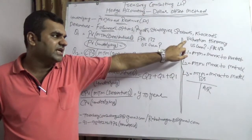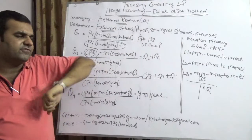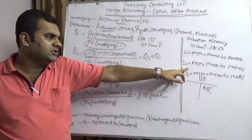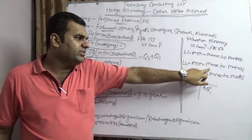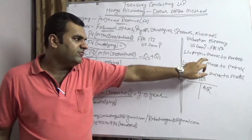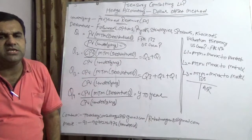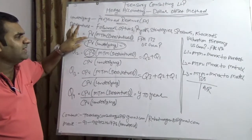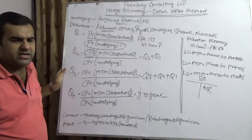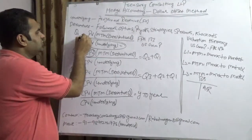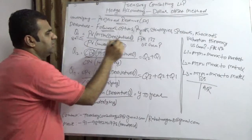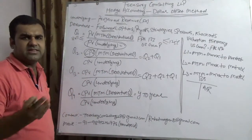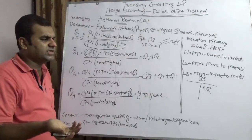For that, we need to understand where this M-to-M is coming from. It is coming from US GAAP accounting standard ASC 157, which is fair valuation. Fair valuation has a framework known as valuation hierarchy, which is of three types: L1 means mark-to-market, L2 means mark-to-matrix, L3 means mark-to-model. All three are termed MTM. Now, for Q1, you calculate the present value of the M-to-M of the derivative divided by the present value of the underlying, and this ratio should be between 80% and 125%. If it turns out to be 76%, then the entire amount goes to either the debit or the credit side of the P&L.